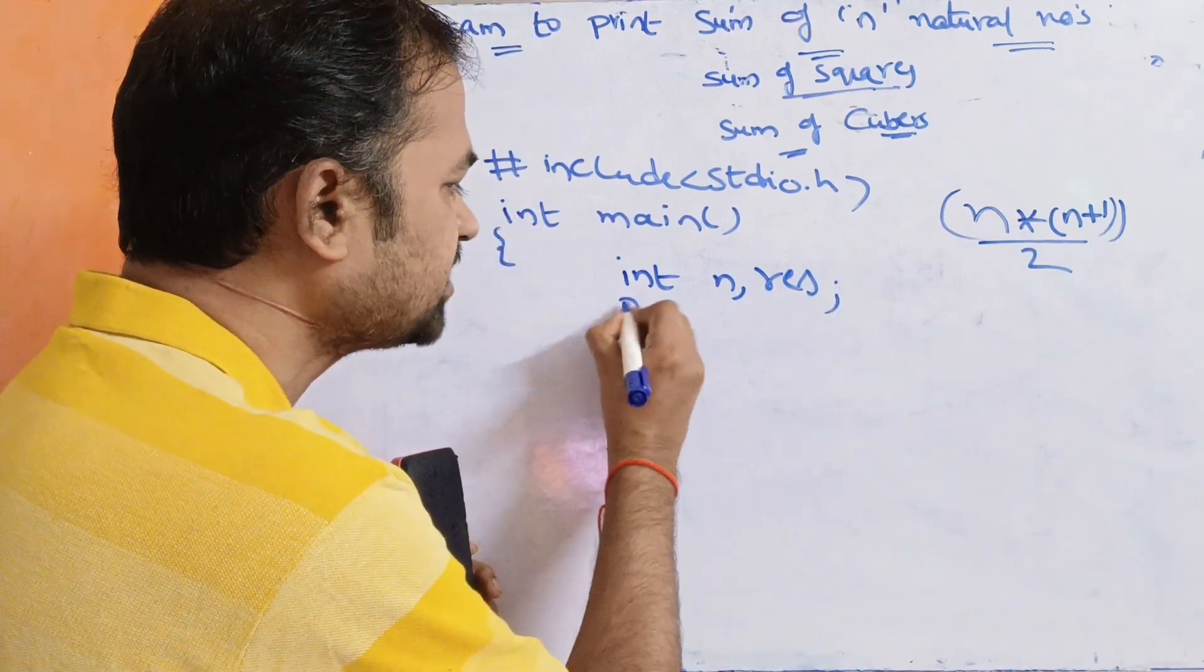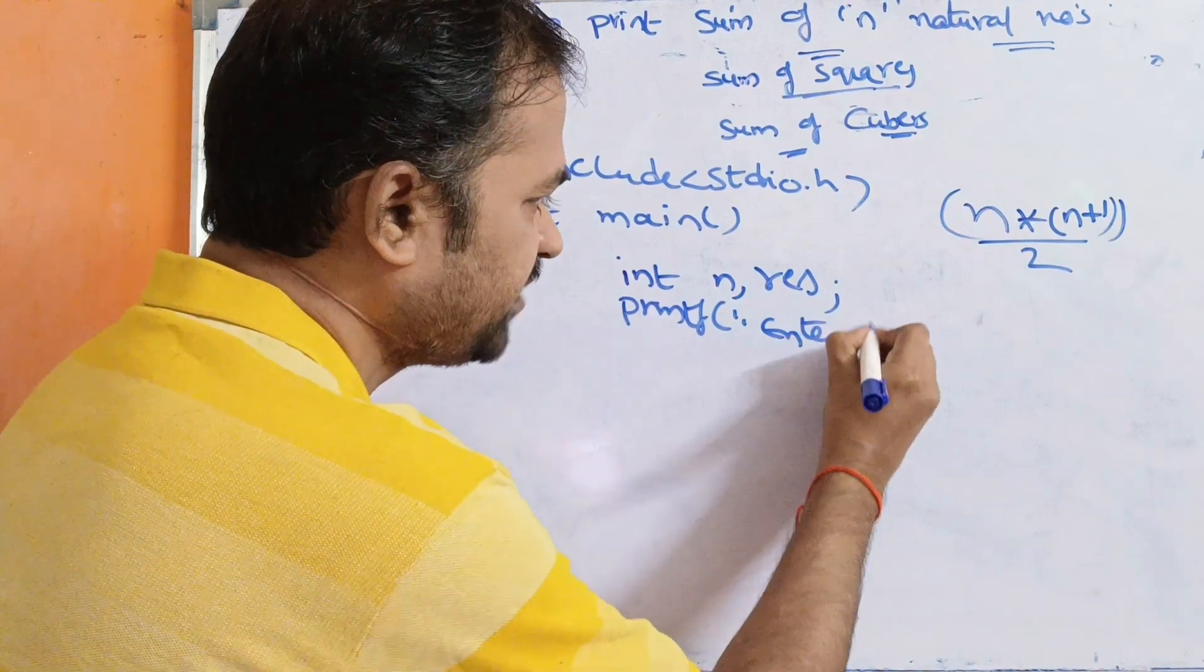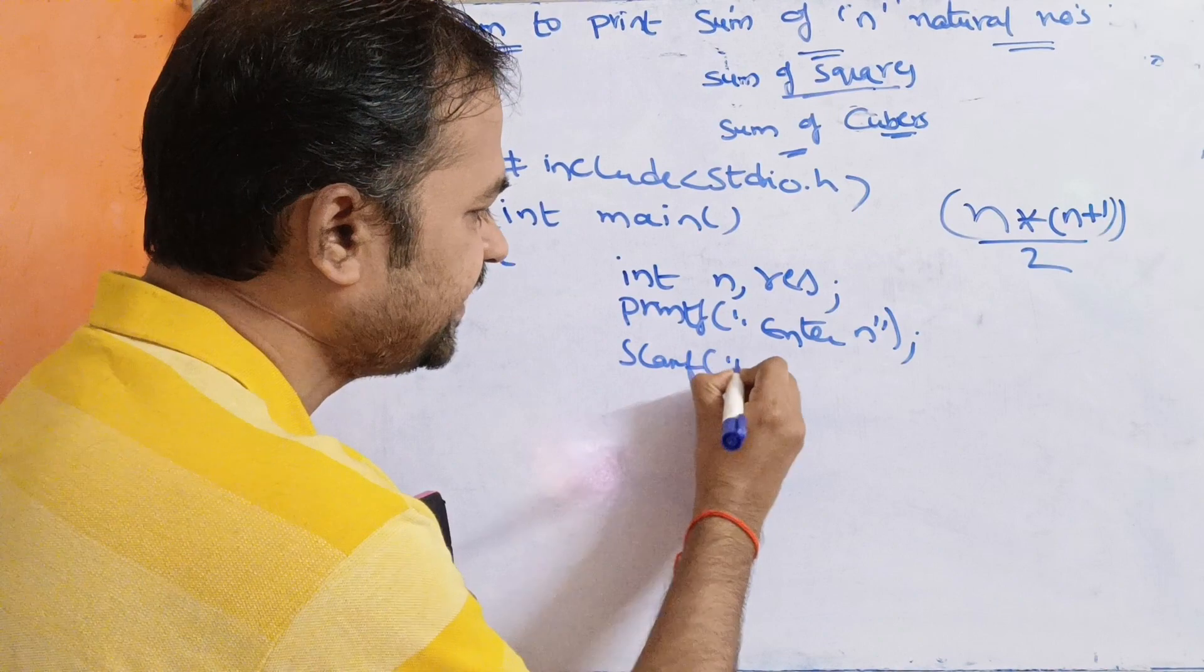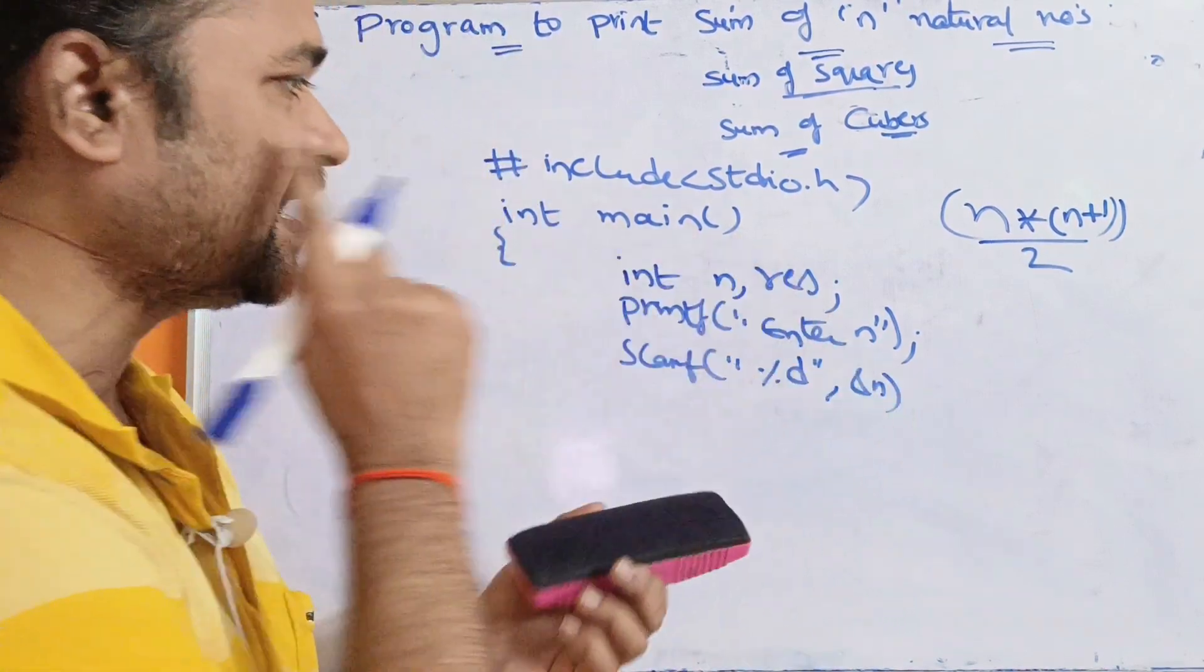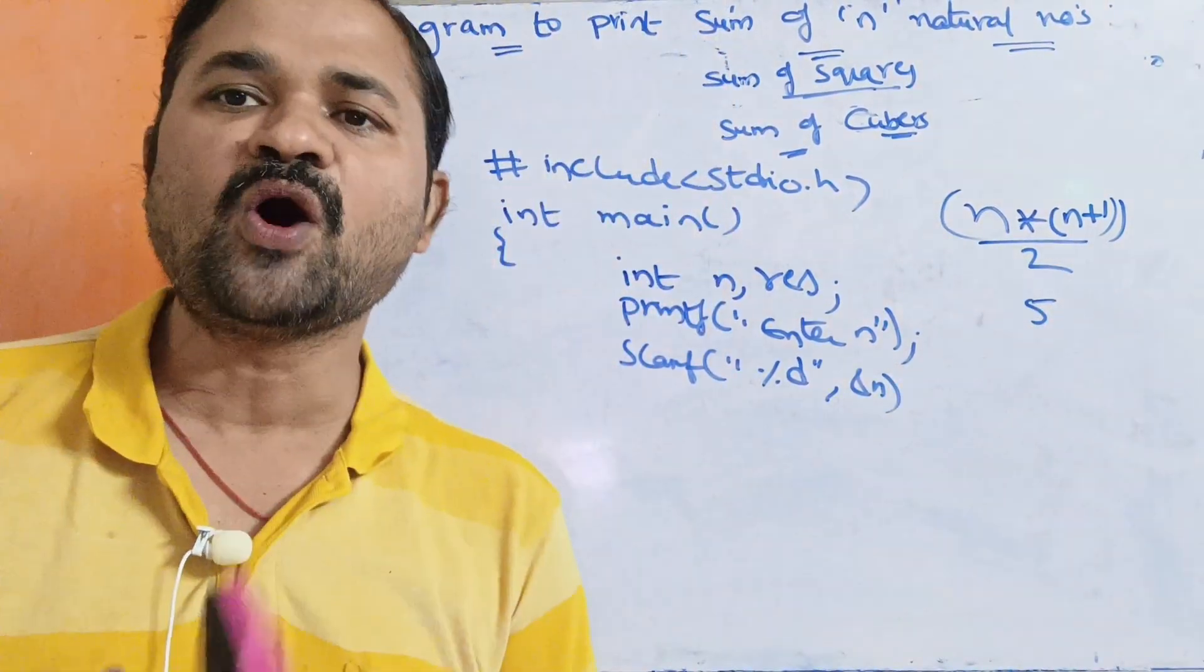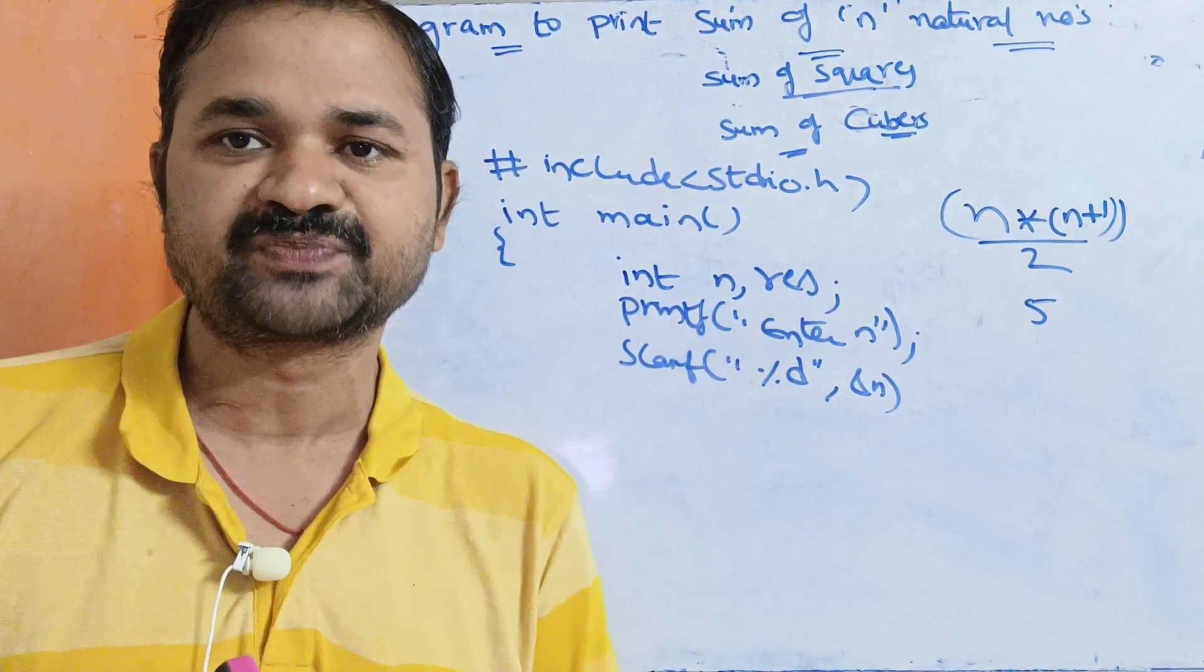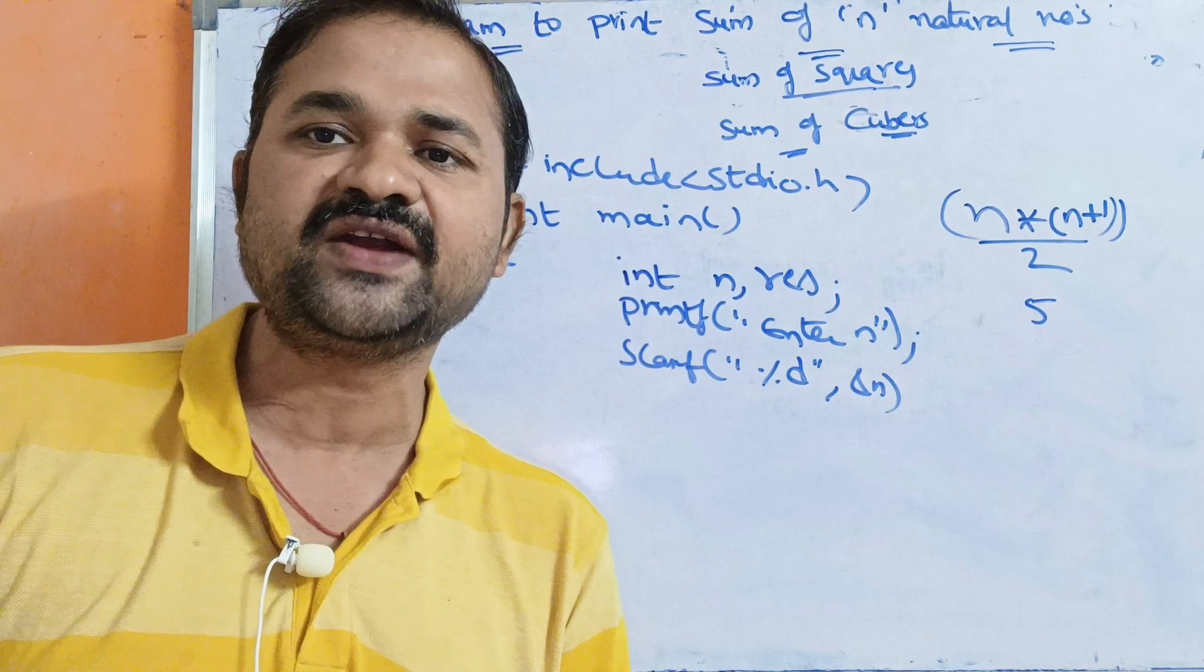We use printf enter n. Next, scanf percentage d, ampersand n. Suppose we give n value as 5. The output will be sum of first 5 numbers. So 1 + 2 + 3 + 4 + 5, that is equal to 15.